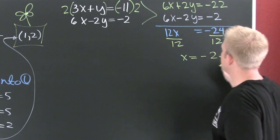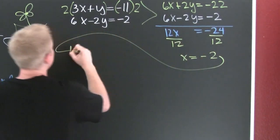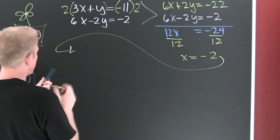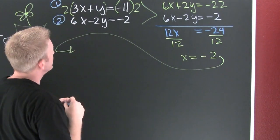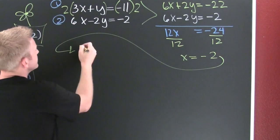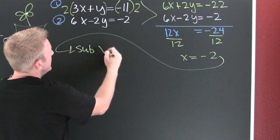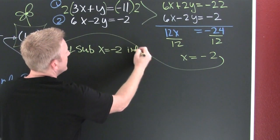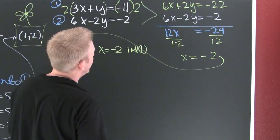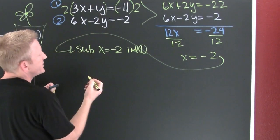So I'm going to take that minus 2 and I'm going to sub it back up into one of the originals. If I was to call this one 1 and this one 2, which one of the originals do you want to plug that into? Why don't we plug it into one? So x equals minus 2 into 1. Why? My numbers are nicer.